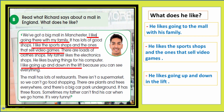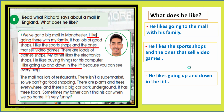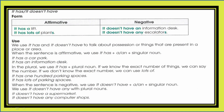Now let's see what we have in this lesson. There is another structure also used to describe places, which is 'it has' or 'it doesn't have'. In the affirmative we use 'it has', and in the negative we use 'it doesn't have'. For example: 'it has a lift', 'it has lots of plants', 'it doesn't have an information desk', 'it doesn't have any escalators'.